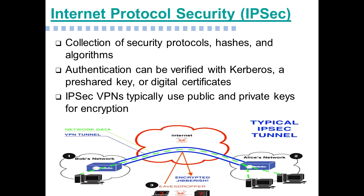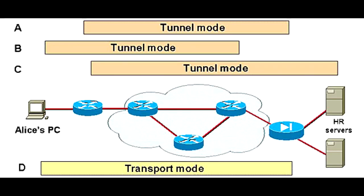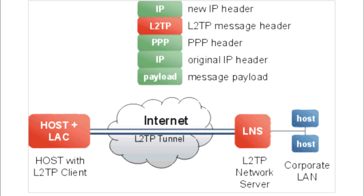IPsec operates in two modes: transport mode and tunneling mode, to protect data transfer between two different networks. The transport mode encrypts the message in the data packet, and the tunneling mode encrypts the entire data packet. IPsec can also be used with other security protocols to enhance the security system.